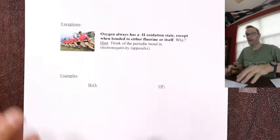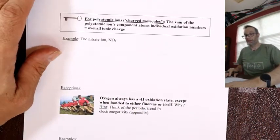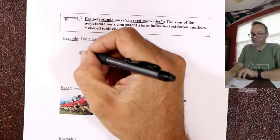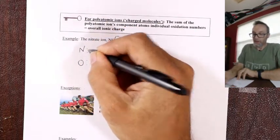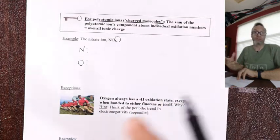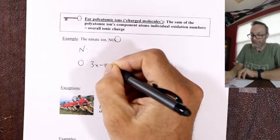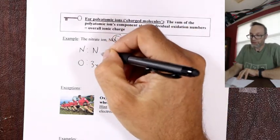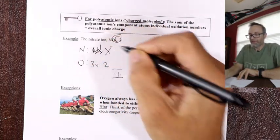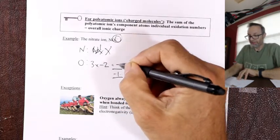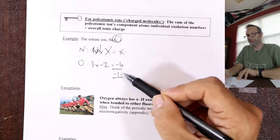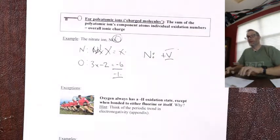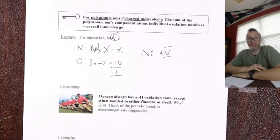What about polyatomic ions — molecular ions? The sum of the oxidation states equals the overall charge. For nitrate: I've got N and O. Oxygen is the winner — three times minus two equals minus six — and this all adds up to minus one because it's a minus one ion. One nitrogen times its magic oxidation state: something combined with minus six is minus one — plus five again. Nitrogen is plus five.